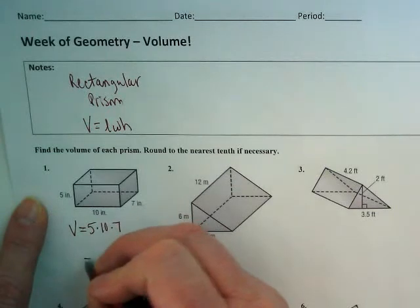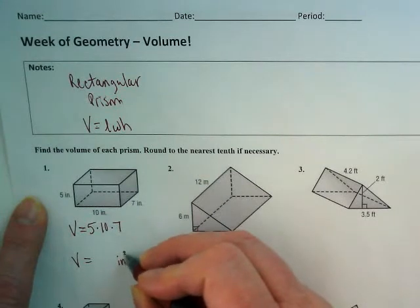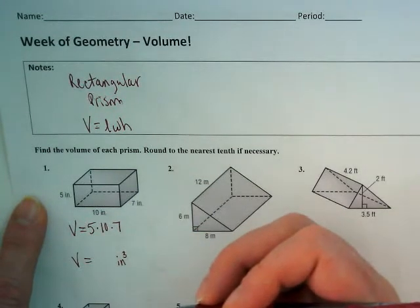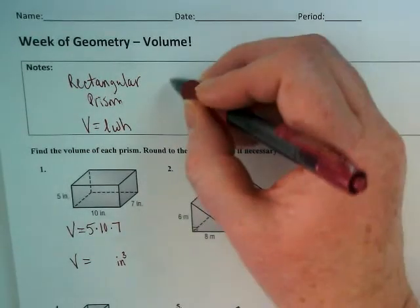After you finish multiplying it though, know that volume is always equal to the measurement cubed, because we're looking at this entire space in here. What would fill that up?